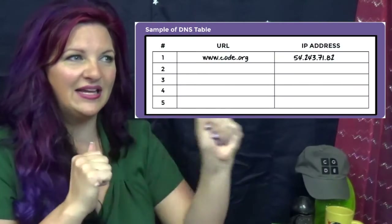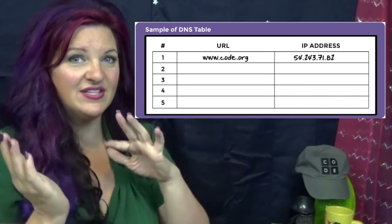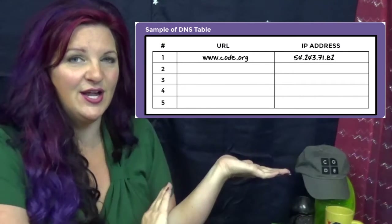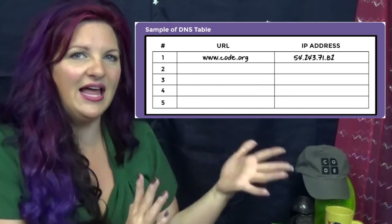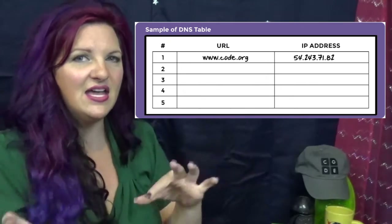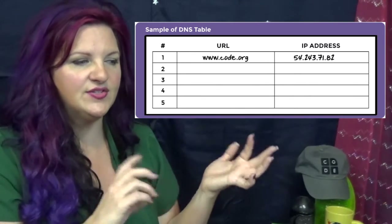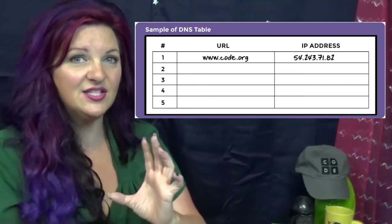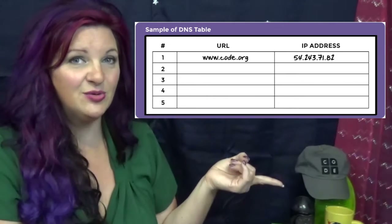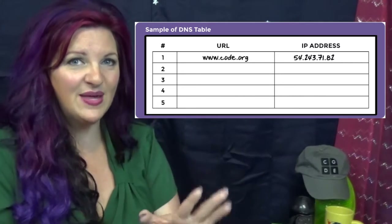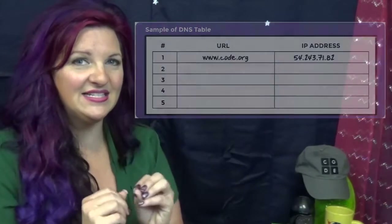Let students know: in this game, they'll have messages that they tear up into little pieces called packets, and they have to send those packets through the internet one at a time. But they can't send directly to the recipient — they have to send through the DNS server, because the DNS server takes the URL address we all know and translates it into a number. They'll be given a URL, the DNS will translate it, and then they deliver their messages one packet at a time.